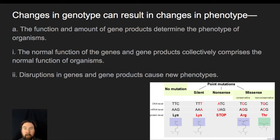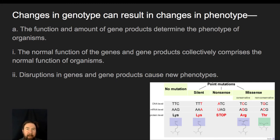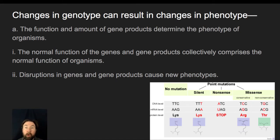If we assume that the original protein made without mutation supports normal survivability, we'll be comparing everything against that. There are instances where the loss of production of a particular protein — if that protein is not core to surviving and reproducing — may actually lead to an energetic advantage. Disruptions in genes and gene products will cause a new phenotype, such as an organism making a new pigment or a different pigment. This leads to variation and adds new phenotypes to a gene pool, which is the raw material for natural selection to act upon.